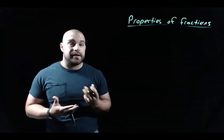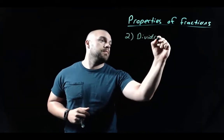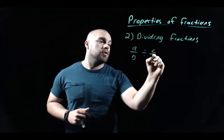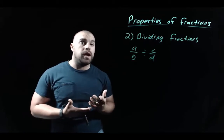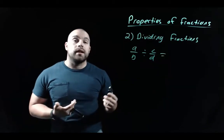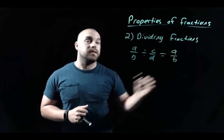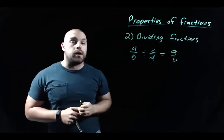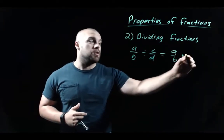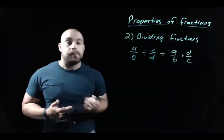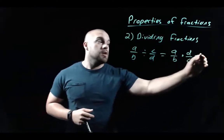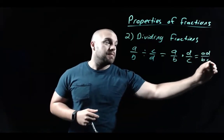Related to multiplying fractions is dividing fractions. If we had a over b divided by c over d, we turn this into a multiplication problem using a reciprocal. We leave the first fraction a over b the same, but instead of dividing by the second fraction, we multiply by its reciprocal — flipping it to d over c. Then we multiply numerators and denominators: a times d on top and b times c on bottom.